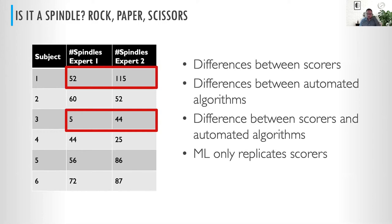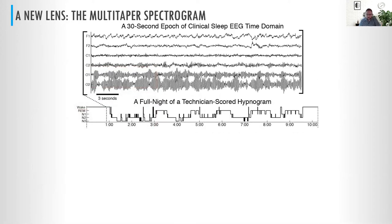Moving forward, there are lots of studies showing differences between scorers, differences between automated algorithms, and differences between all the scorers and the algorithms. Ultimately, any automated method or machine learning approach tends to replicate flawed human scoring — so we end up in a circularity, a chicken-and-egg problem. So what's our new methodological lens to look at this phenomenology?